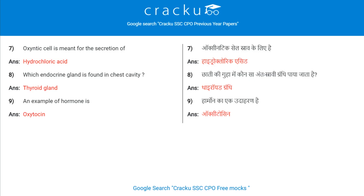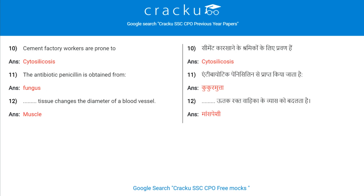Oxynetic cell is responsible for the secretion of Hydrochloric acid. Which endocrine gland is found in the chest cavity? Thyroid gland. An example of a hormone is oxytocin. Cement factory workers are prone to silicosis. The antibiotic penicillin is obtained from fungus.